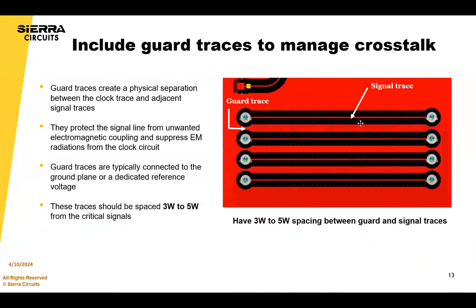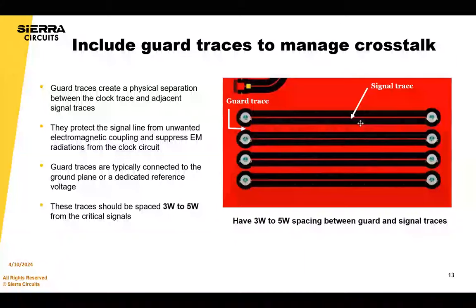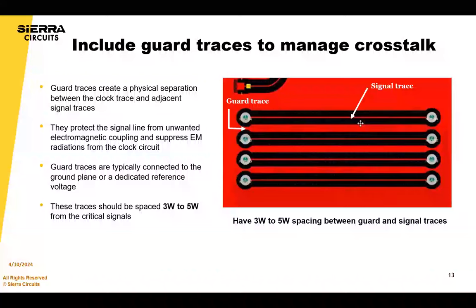Guard traces suppress radiated electromagnetic emissions by providing a barrier between the clock circuit and the surrounding traces, reducing the system's potential for EMI. They're typically connected to the ground plane or a dedicated reference voltage, and they should be spaced between 3W to 5W from critical signals to maintain optimal effectiveness. Make sure you also follow manufacturing guidelines based on your copper weights and what your manufacturer can do.